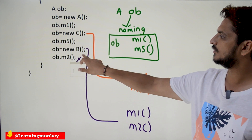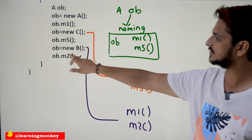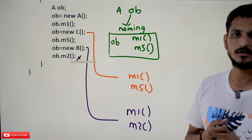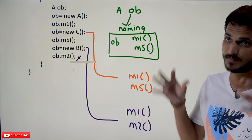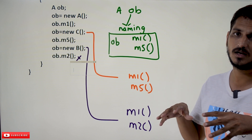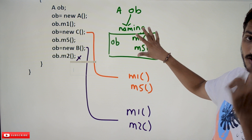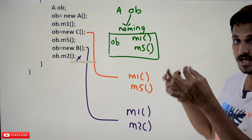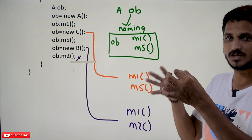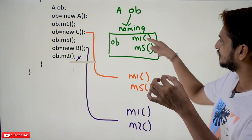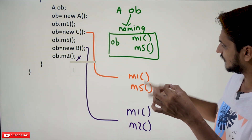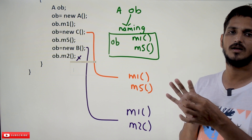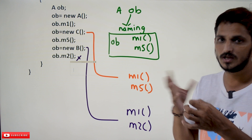The statement calling M2 via OB is invalid — it is not going to be executed. This is what happens internally: whenever you create a reference variable, it stores the naming. When you attach an object, the object's methods must match the naming. Only methods that match the naming can be called.